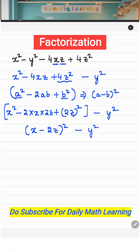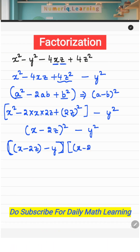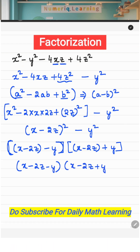Now you have brought it to the form a squared minus b squared, which is a minus b into a plus b. Here a is x minus 2z, so opening the brackets gives x minus 2z minus y multiplied by x minus 2z plus y. And that's the answer!